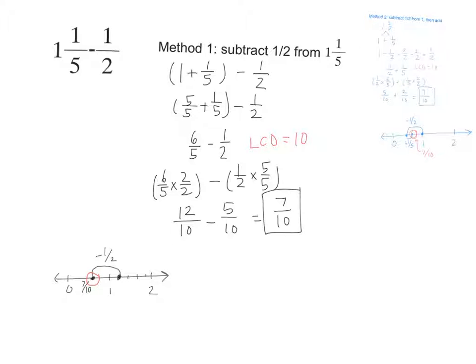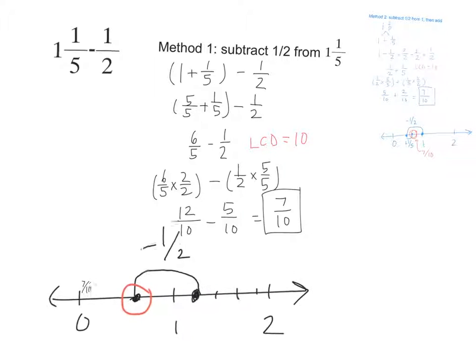Here we're seeing that 1 and 1 fifth is the same as 1 plus 1 fifth. And 1, another way to say 1 is 5 fifths. So is 1 and 1 fifth the same as 5 fifths plus 1 fifth? Yeah, which is 6 fifths, right? And then we can do 6 fifths minus 1 half. I need to find my LCD of 10 so that I can multiply, I can find equivalent fractions by multiplying 6 fifths by 2 halves and 1 half by 5 fifths to get 12 tenths minus 5 tenths equals 7 tenths.